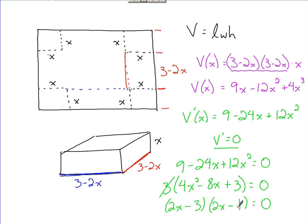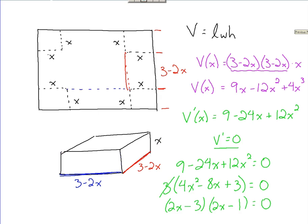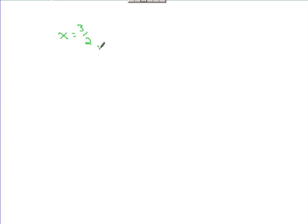If you've got 2x minus 3 equal to zero, then x is going to equal 3 halves. And if our other factor was 2x minus 1, that's going to be 1 half.